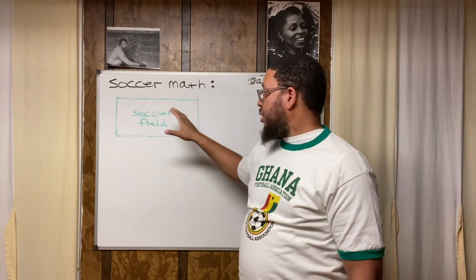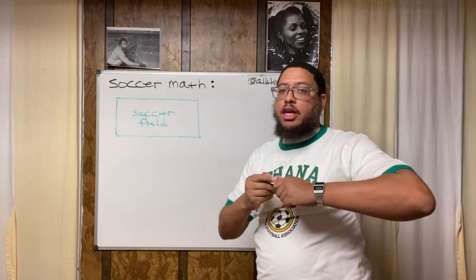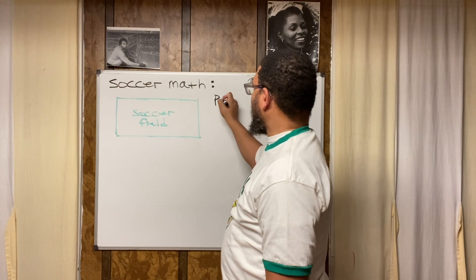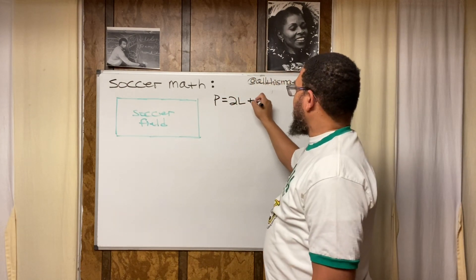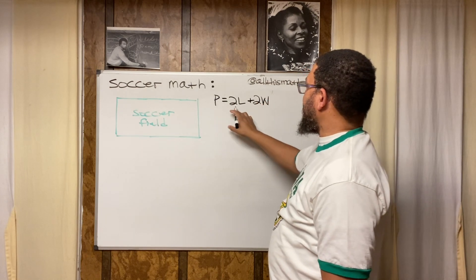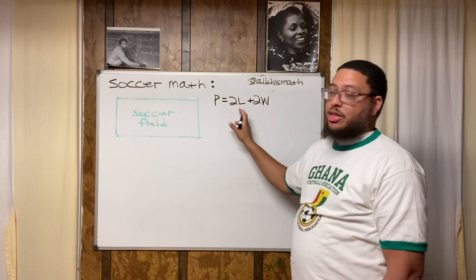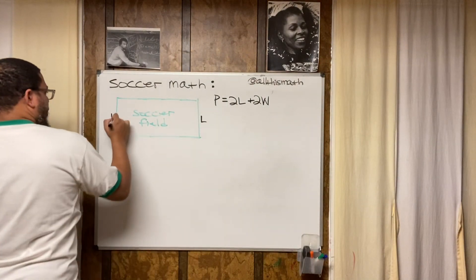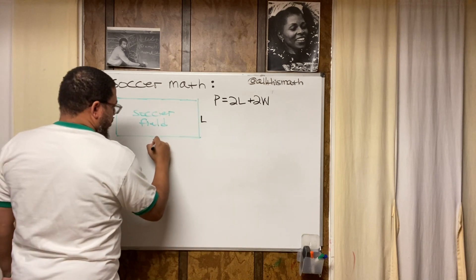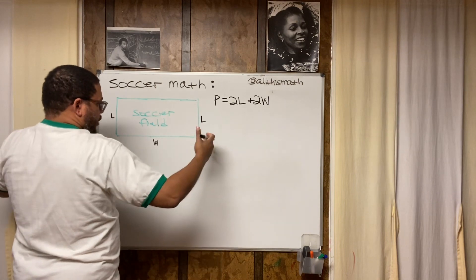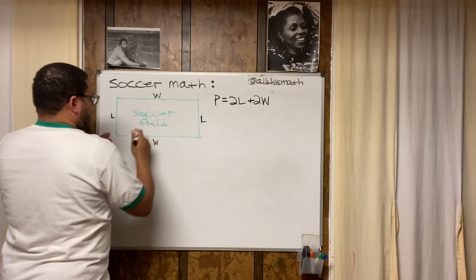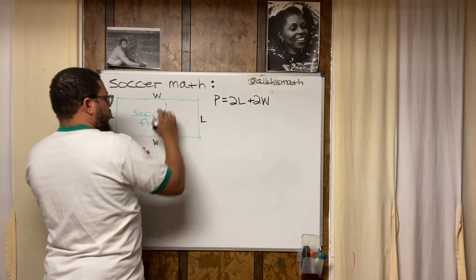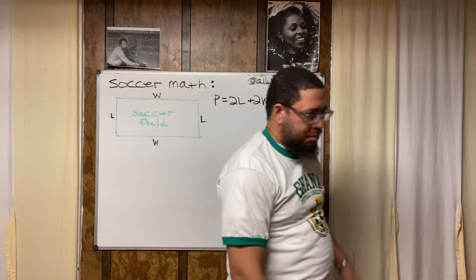This is our soccer field — it's a rectangle. Now we need the formula for the perimeter of any rectangle. The formula is P equals 2L plus 2W, where P stands for perimeter, L stands for the length, and W stands for the width. The two lengths are opposite and equal, and the two widths are opposite and equal. So 2L gives us the total length contribution and 2W gives us the total width contribution.